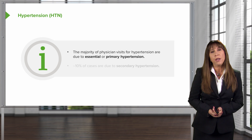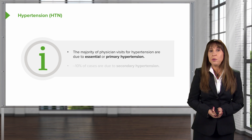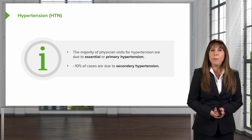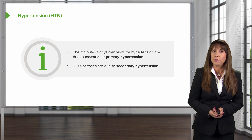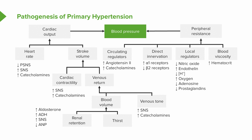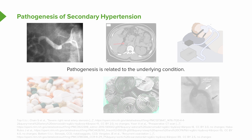When we think about hypertension, the majority of physician visits are due to what we used to term essential or primary hypertension. But about 10% of those cases are actually due to secondary hypertension. The pathogenesis of primary hypertension is really multifactorial — things like an increase in sympathetic nervous tone, activation of the RAS increasing cardiac output, and local and circulating regulators increasing peripheral vascular resistance. This is in contrast to secondary hypertension, where the pathogenesis is related to the underlying condition.